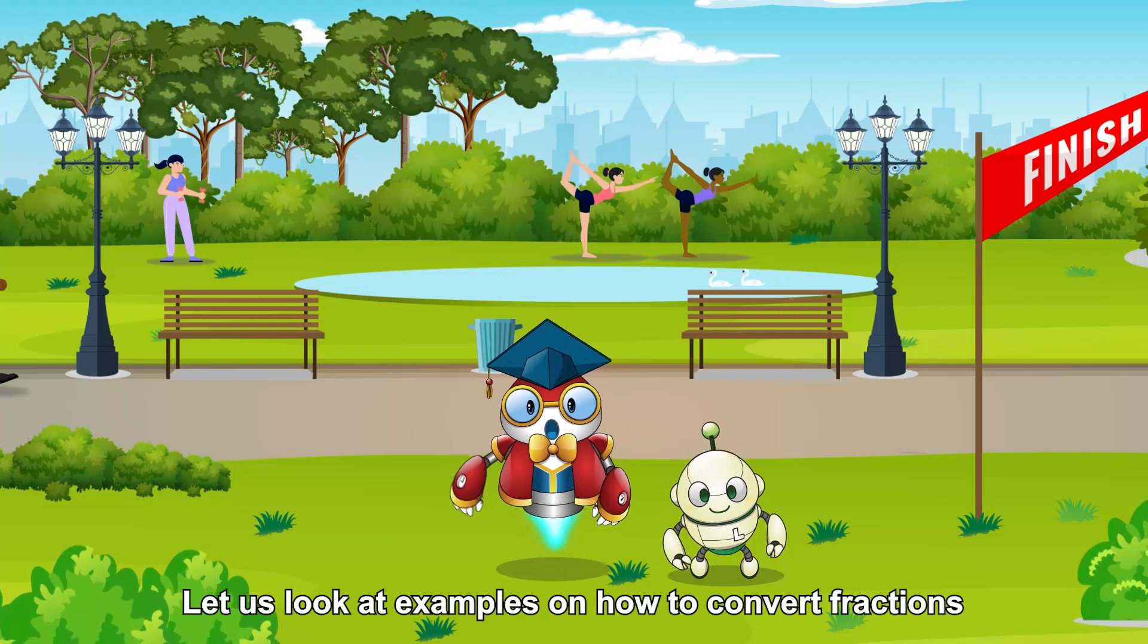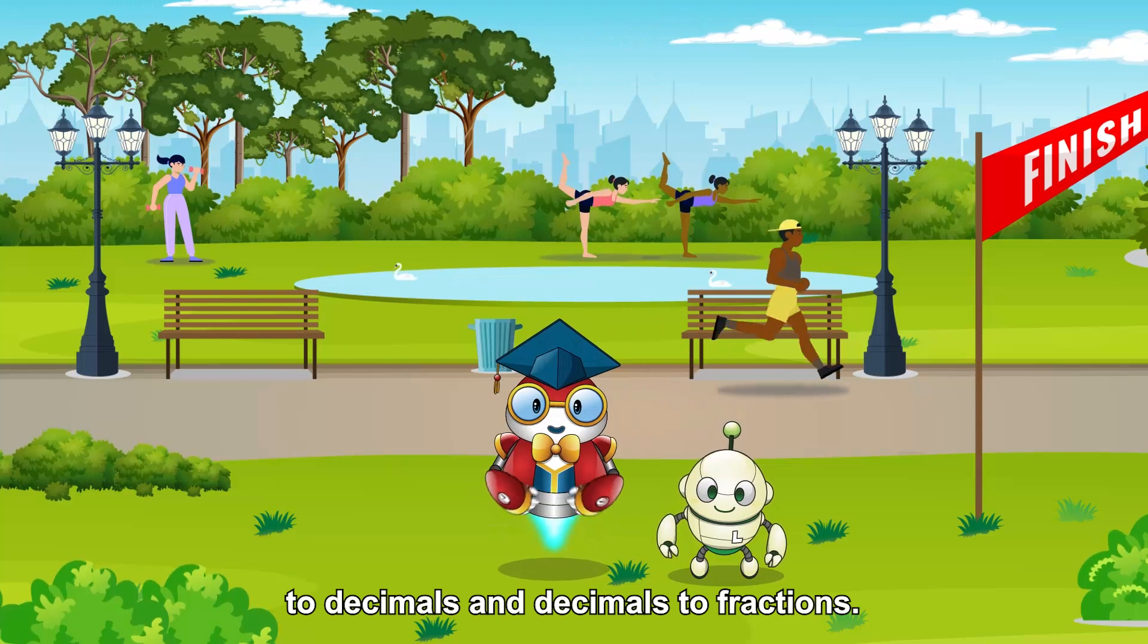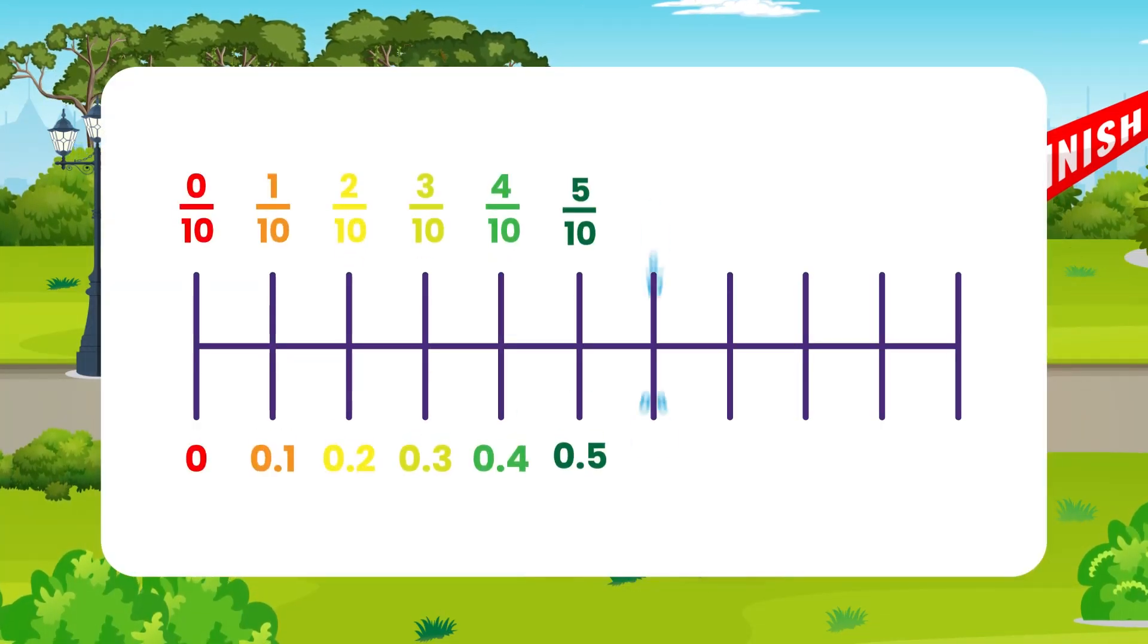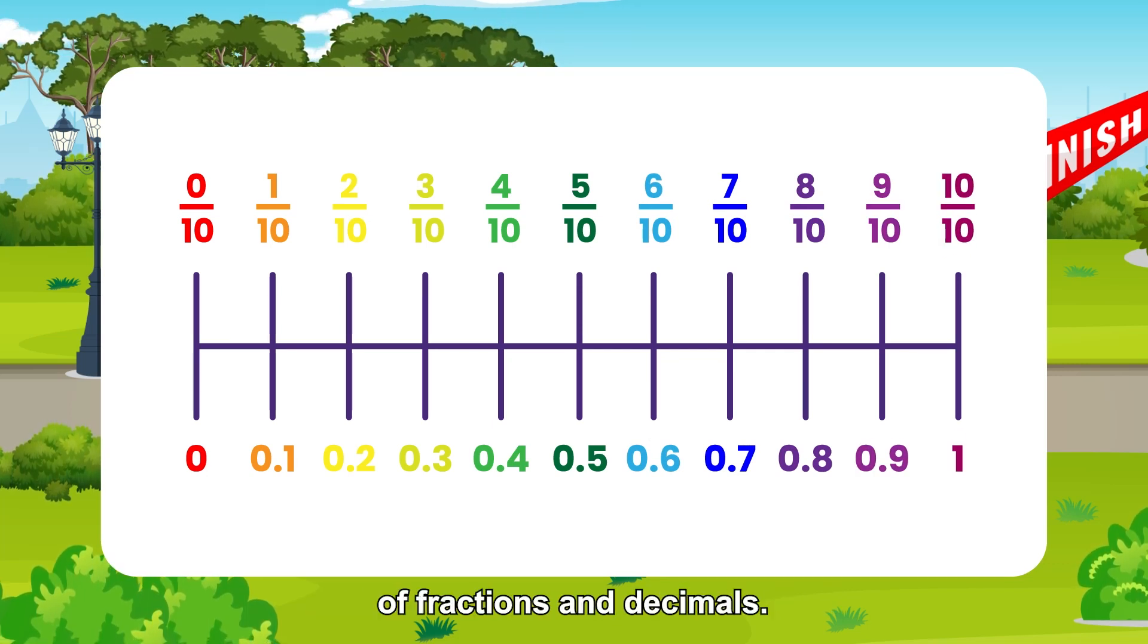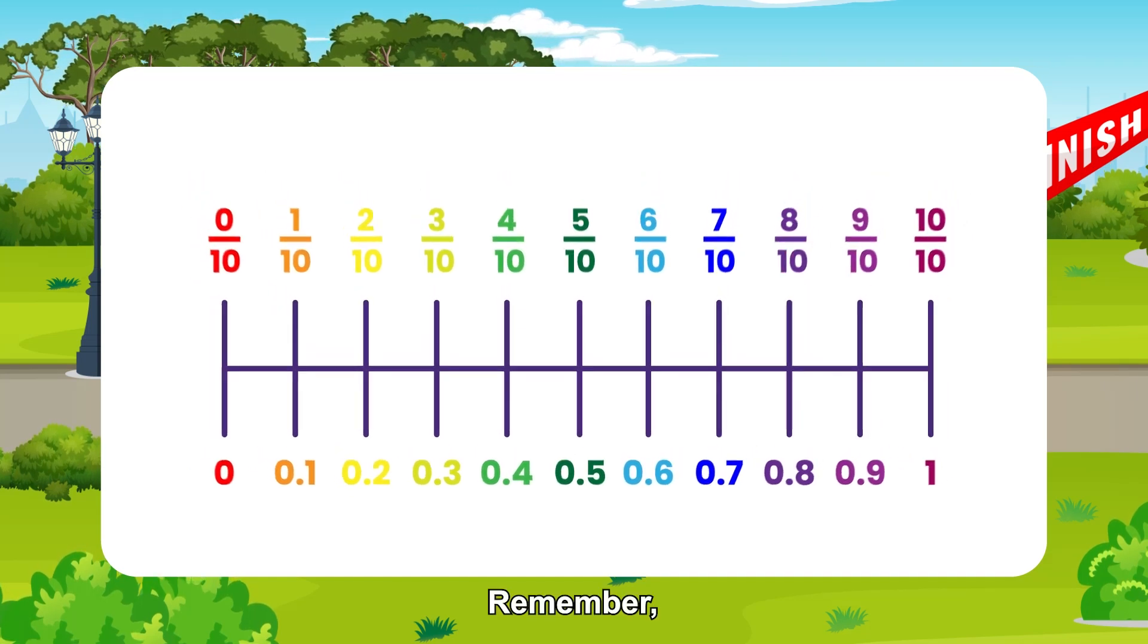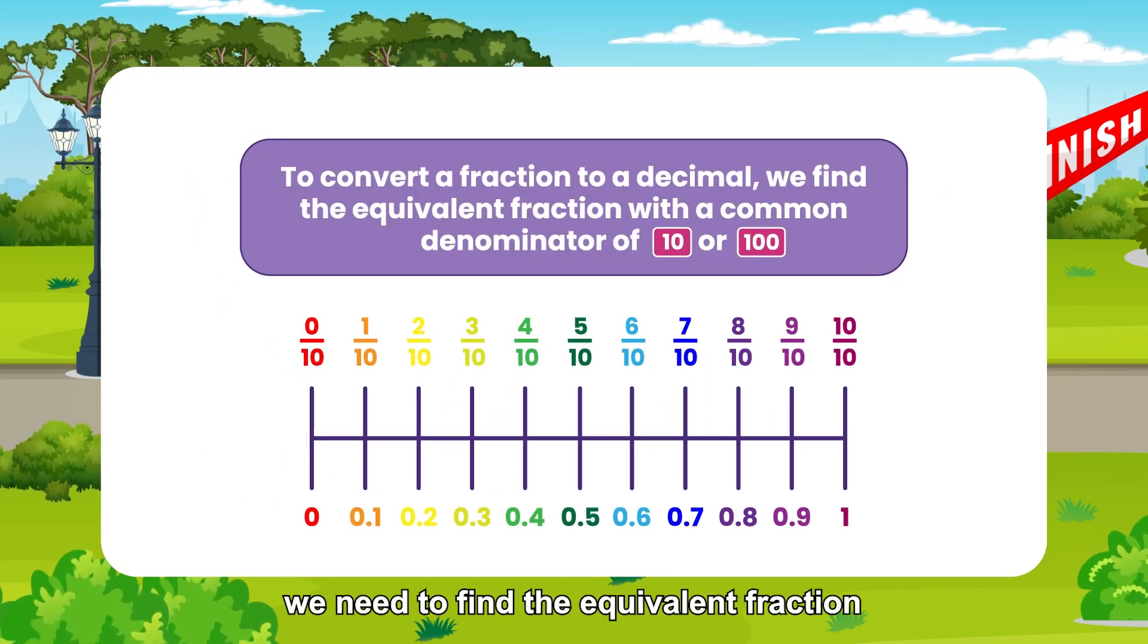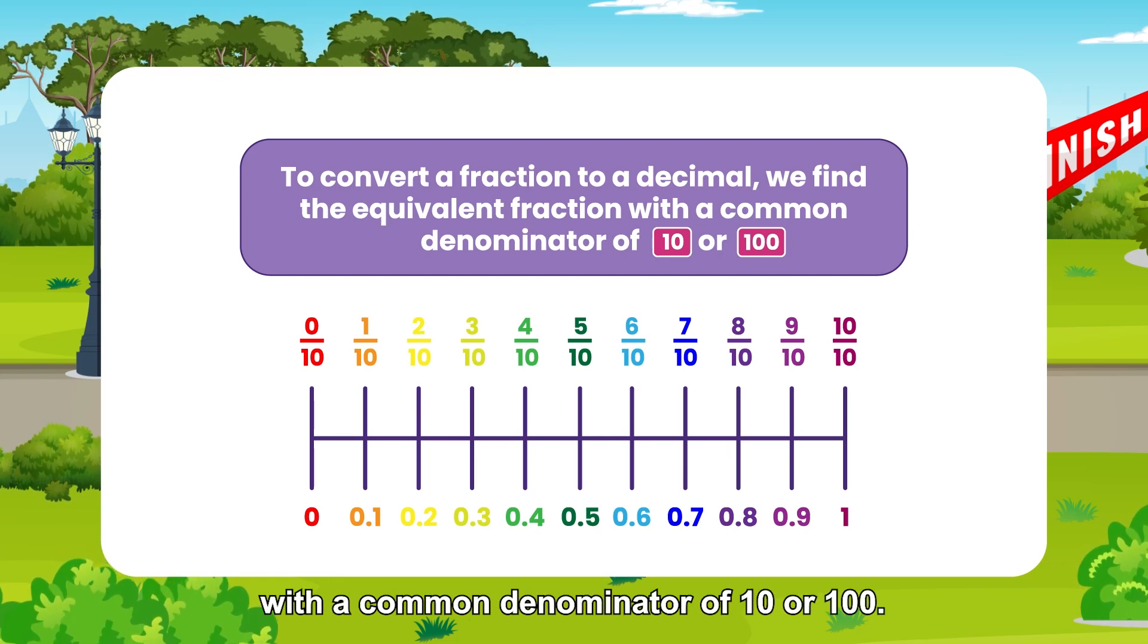Let us look at examples on how to convert fractions to decimals and decimals to fractions. The bar shows us equivalent values of fractions and decimals. Remember, to convert a fraction to a decimal, we need to find the equivalent fraction with a common denominator of 10 or 100.